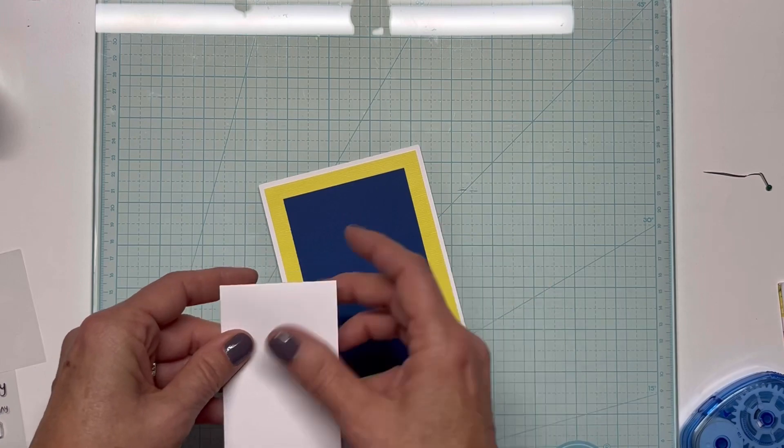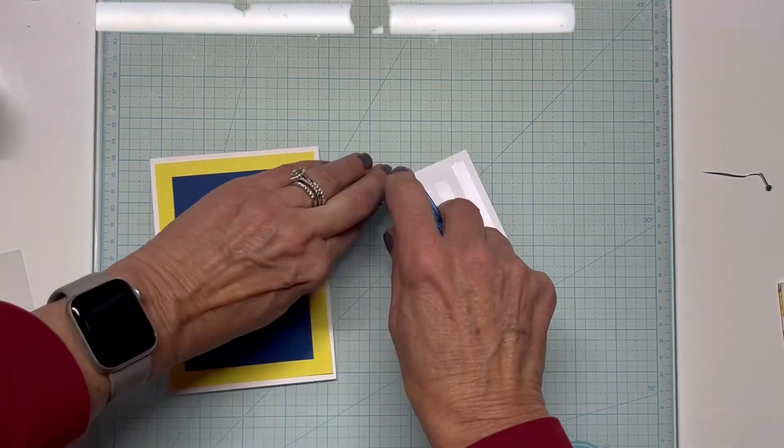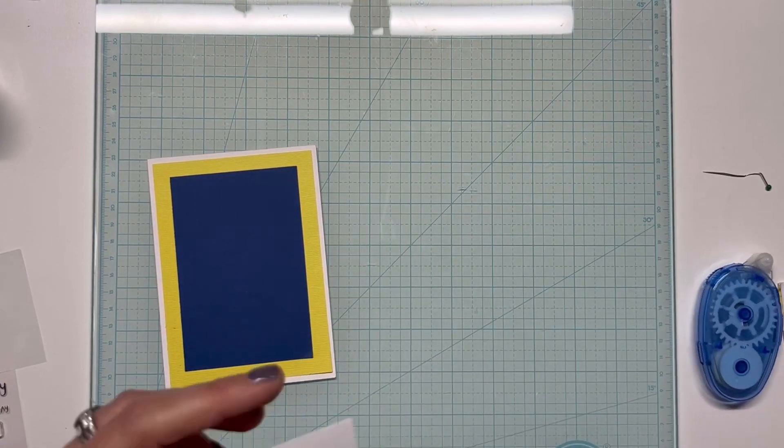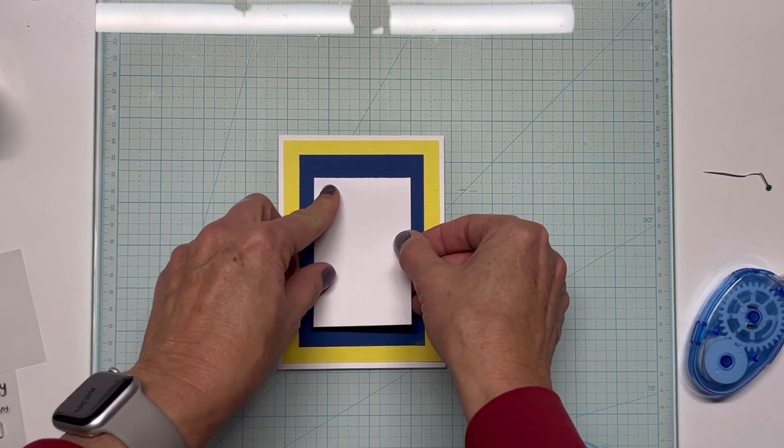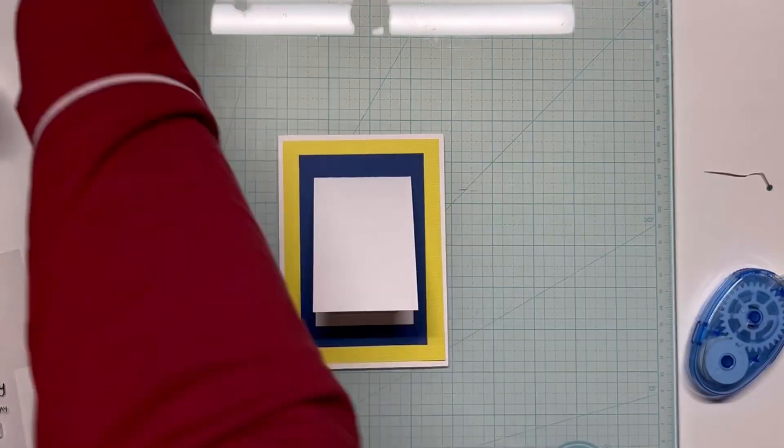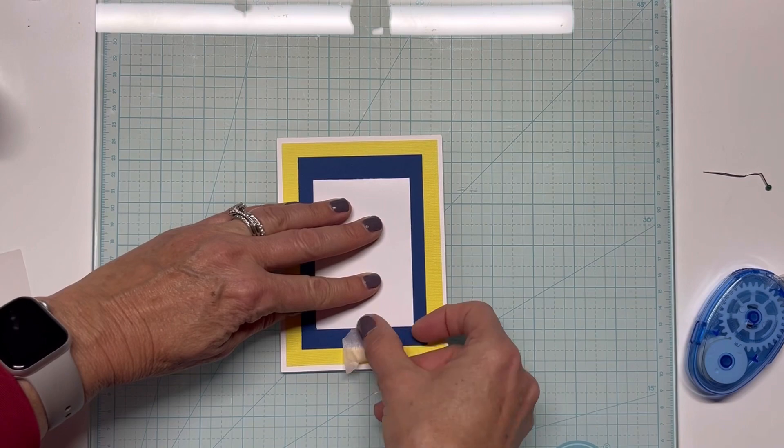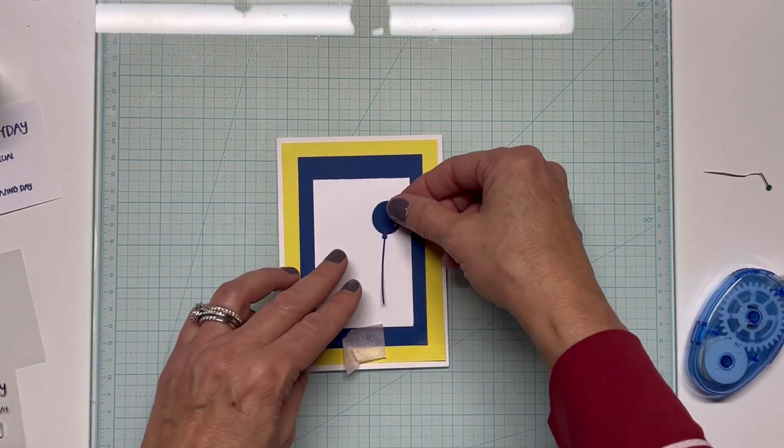I had this white, like itty bitty card panel. I don't even know why I had it laying in my scraps but I thought I'm going to use it. So I just took part of the yellow that I die cut out of the center and put it inside there. I'm just going to lay this little miniature card down on my card base and this is going to be where I'm going to put my balloons. So I'm going to tape it down so it doesn't pop up as I'm trying to work with my dies.